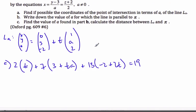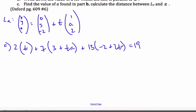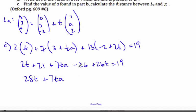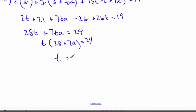I have to find this in terms of A. Let's simplify this. I get 2t plus 21 plus 7tA minus 26 plus 26t equals 19, which gives me 28t plus 7tA minus 5 equals 19. Adding 5 over, I get 28t plus 7tA equals 24. Solving for t, I get t equals 24 divided by (28 + 7A).